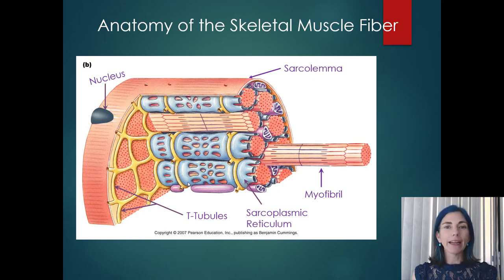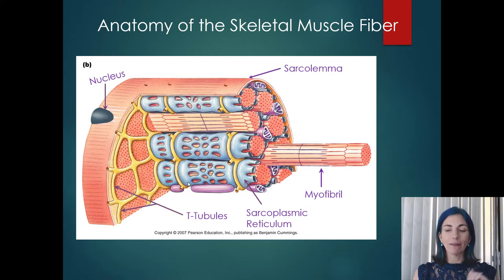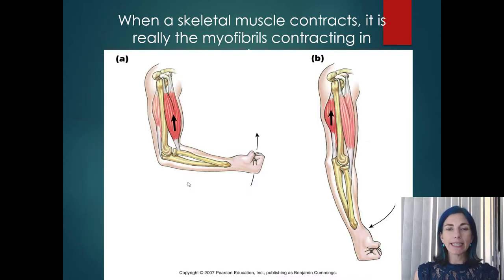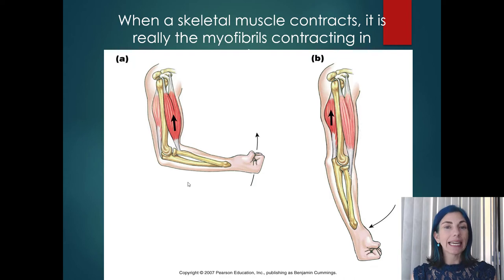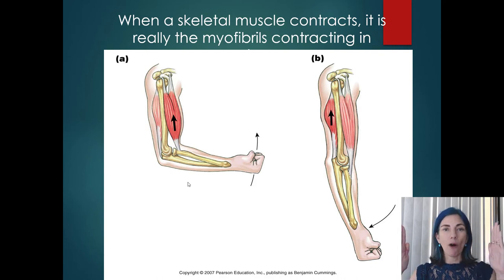Finally, let's look at muscle contractions. Inside a skeletal muscle fiber are many individual myofibrils — and it is the myofibrils that are actually shortening and lengthening. When your biceps or triceps contracts, the individual muscle fibers shorten because the myofibrils within them shorten. To understand the physiology of how a muscle contracts, we need to learn myofibril anatomy and how they shorten and lengthen — but that's saved for part two of this lecture.